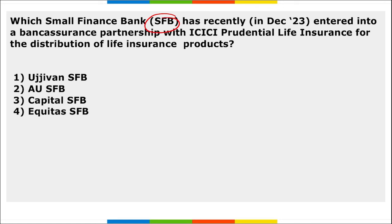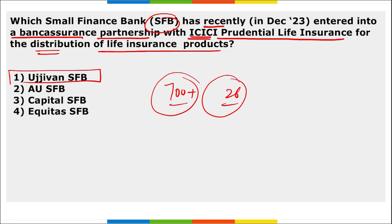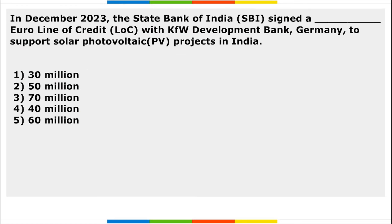Next: which small finance bank has recently entered into a bancassurance partnership with ICICI Prudential Life Insurance for the distribution of life insurance products? It is Jana Small Finance Bank. Under this partnership, Jana Small Finance Bank's 700-plus branches across 20 states and UTs will offer the entire suite of ICICI Prudential Life's customer-friendly protection plans, including retirement planning via ICICI Prudential Pension Flexi Plan.